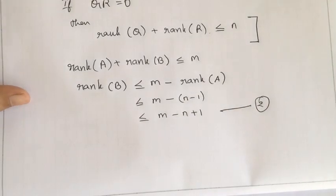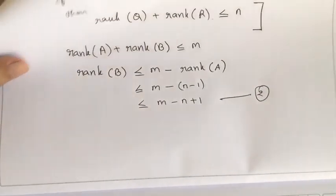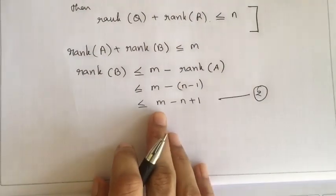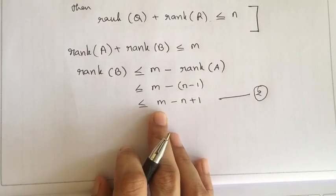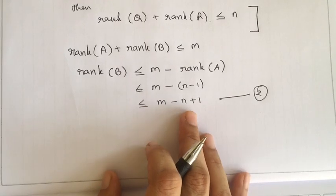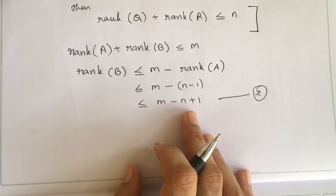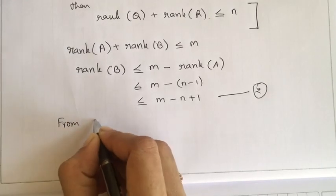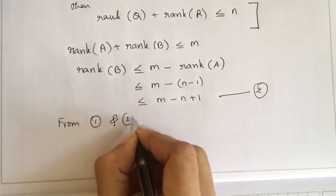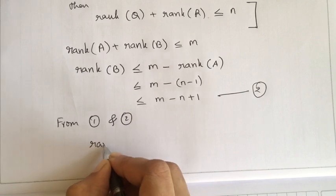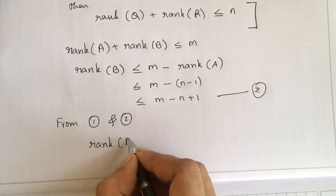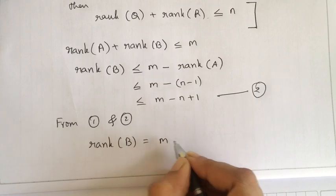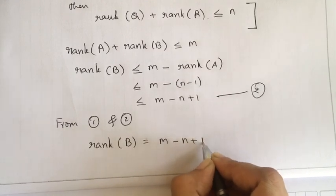From relation 1 (rank of B ≥ m minus n plus 1) and relation 2 (rank of B ≤ m minus n plus 1), we conclude: rank of circuit matrix B equals m minus n plus 1.